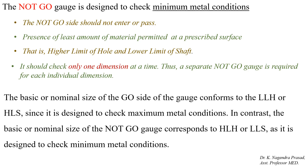The nominal size of the go side of the gauge corresponds to the lower limit of the hole or the higher limit of the shaft, since it is designed to check the maximum metal condition. Similarly, the not go gauge corresponds to the higher limit of the hole or the lower limit of the shaft, as it is designed to check the minimum metal condition.